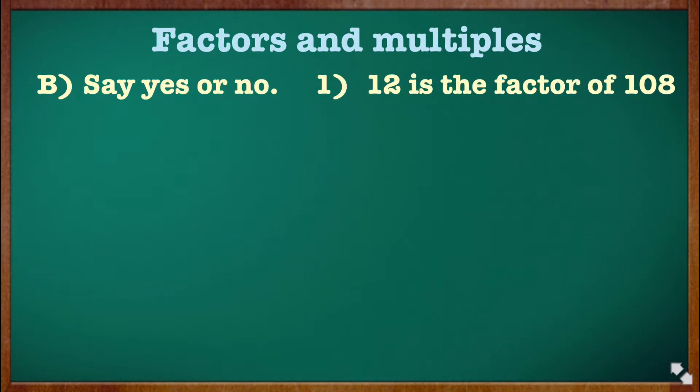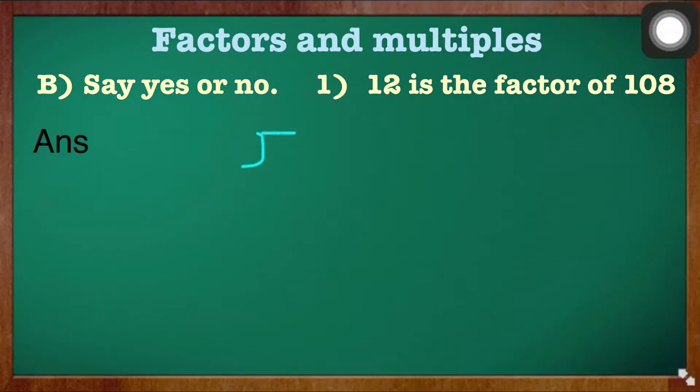Problem B, say yes or no. Question number 1: 12 is a factor of 108. Here we can use the division method to find the answer. Do your normal division: 108 inside the bracket and 12 outside. Now check.